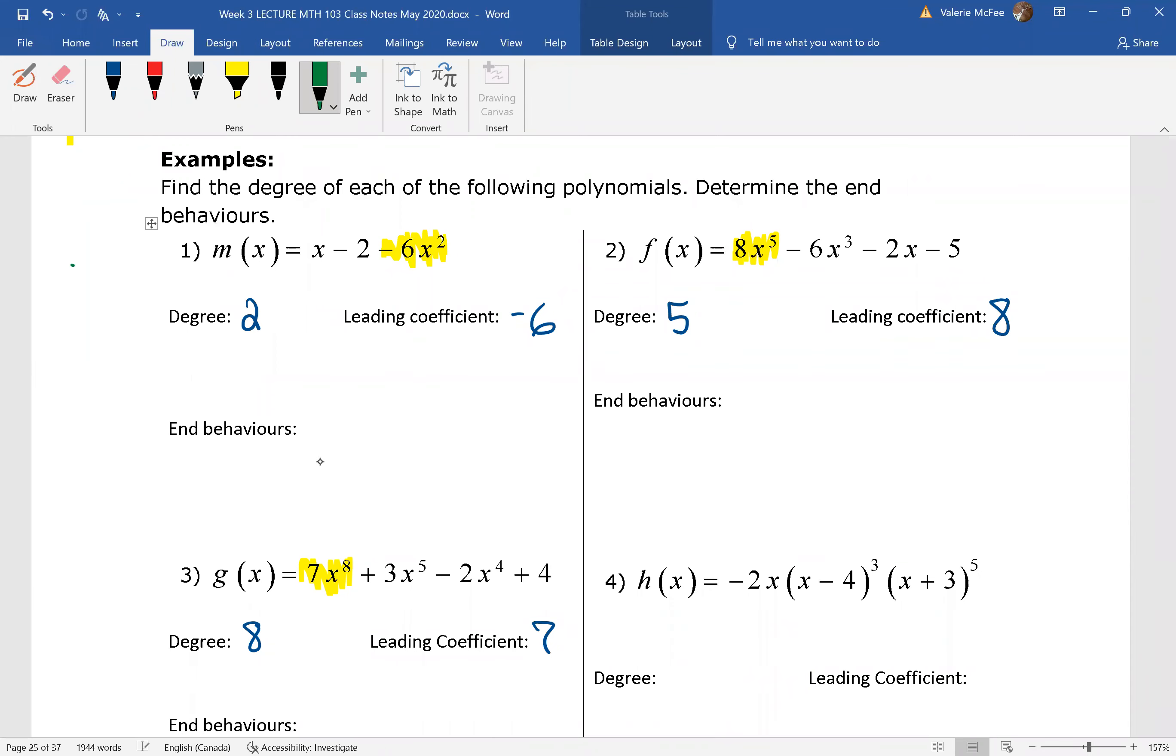So we said that we were interested in whether or not the degree was odd or even. We see here in number one, we have an even degree and we see that we have a negative leading coefficient.